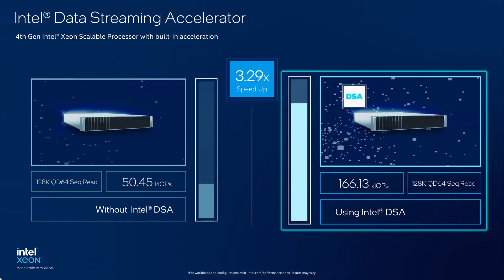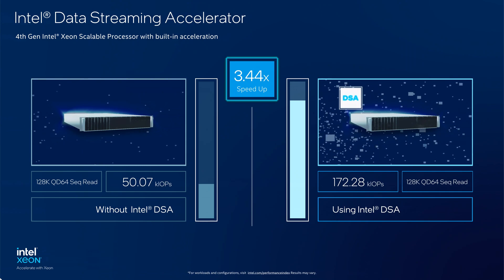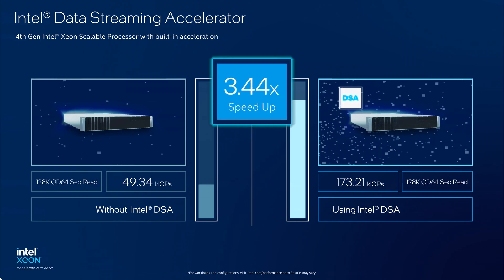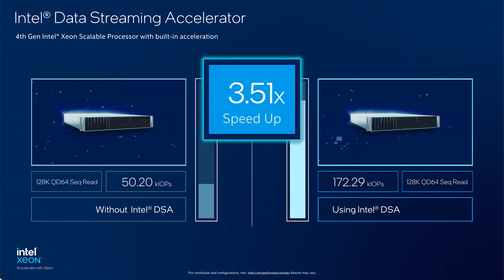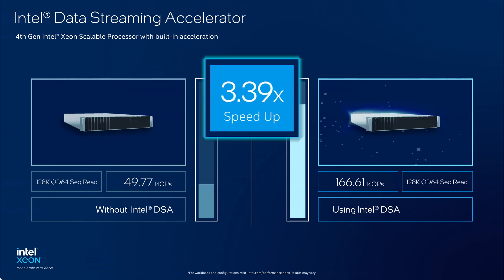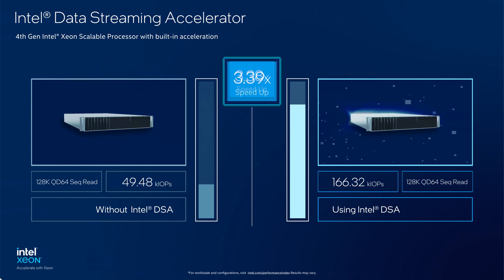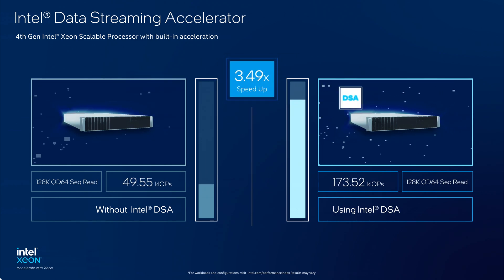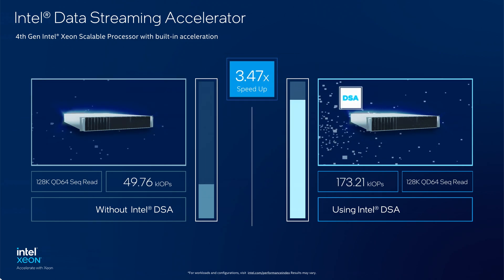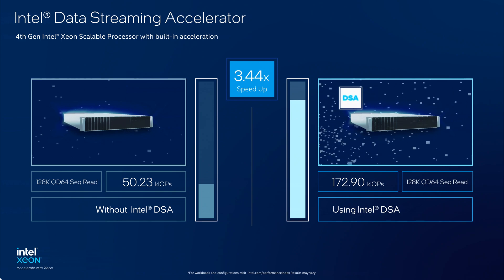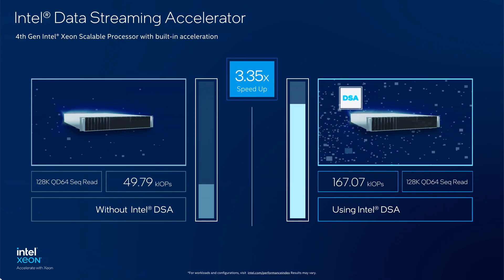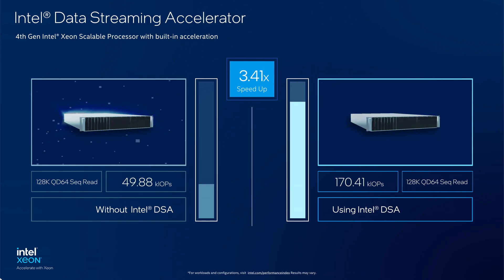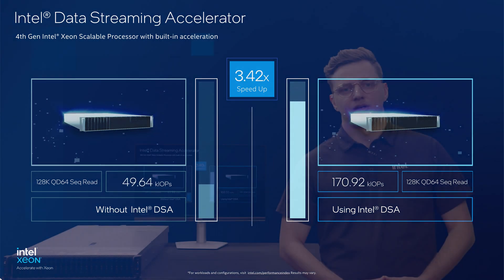Intel Data Streaming Accelerator improves the performance by up to 3.5x versus not using the accelerator. Monitoring the network traffic, the out-of-box run used around 50 gigabits per second of the network, where the one offloading to DSA was able to drive close to 176 gigabits per second.